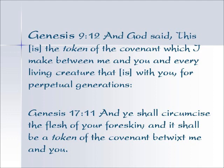Genesis 9:12 — And God said, this is the token, this is the sign of the covenant which I make between me and you and every living creature that is with you for perpetual generations. Spoken by the Father to Noah, that he would never again destroy the entire world by a flood. After the rain we can see in the rainbow, in the bow in the clouds, that this is an external sign of that covenant that was made forever.